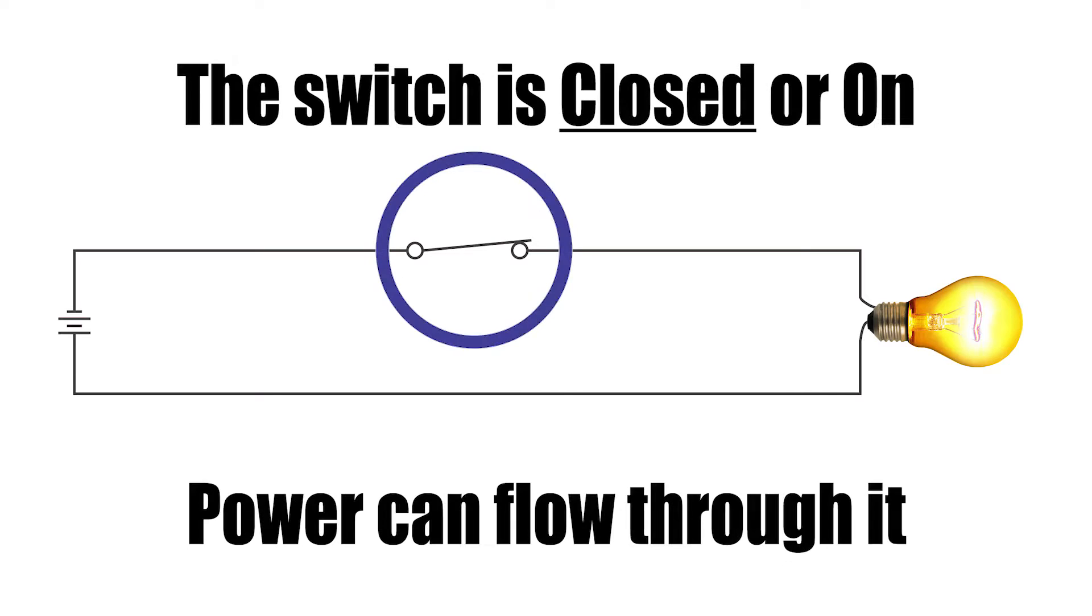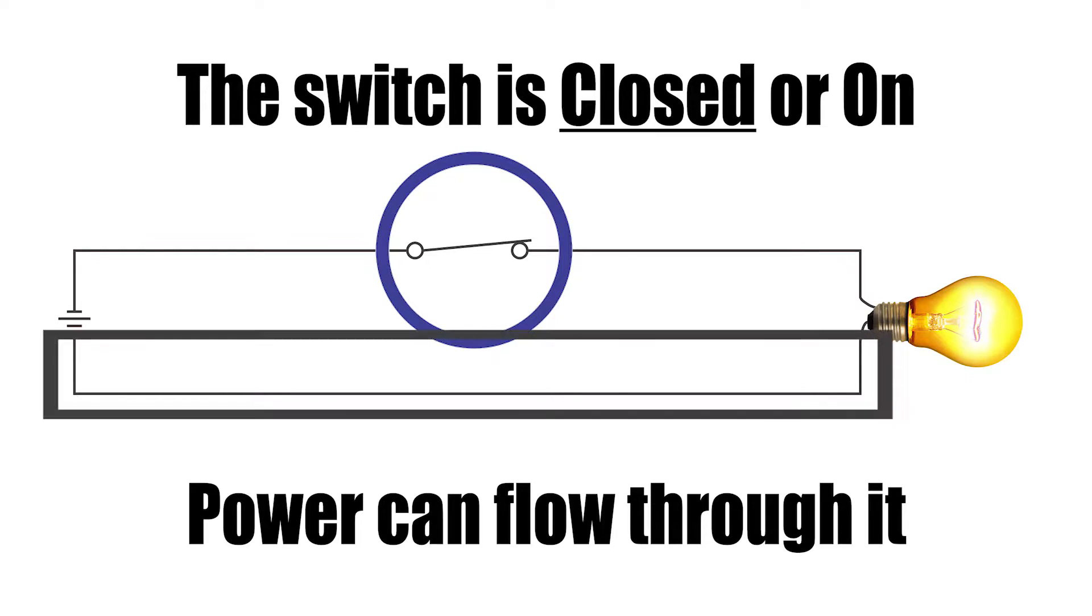In this next picture, the switch is closed and power can freely flow through it to the light bulb, which makes it light up. The wire that runs back to the battery just completes the circuit.